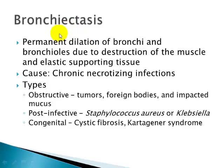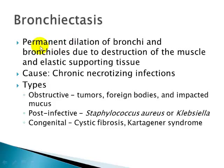The next topic is bronchiectasis, which is not a separate disease entity but an end-stage lung disease involving permanent dilation of bronchi and bronchioles due to destruction of the muscle and elastic supporting tissue. Any kind of obstruction — intrinsic or extrinsic — or infection can lead to bronchiectasis. The suffix '-ectasia' means dilatation, referring to permanent dilation of bronchi and bronchioles.